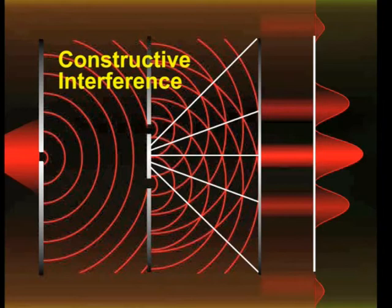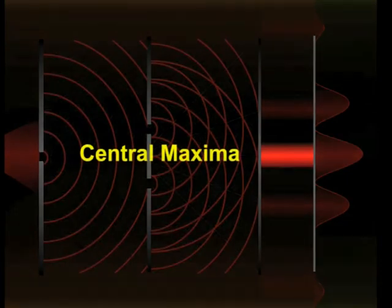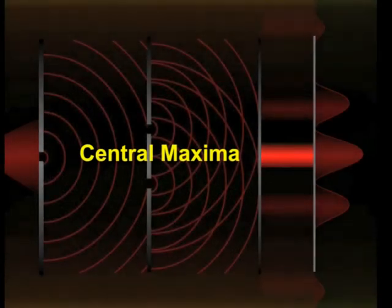Therefore, constructive interference occurs at that point and a bright band is produced. Thus, at the center of the interference pattern, there is a bright band called the central maxima or the zeroth order interference maxima.